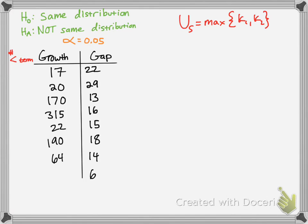So you would say, how many number of terms are less than each one? If we look at 17, notice how many terms are less than 17 in terms of the gap. 22 is larger, 29 is larger, 13 is less, 16 is less, 15 is less, 18 is larger, 14 is less, and 6 is less. So that's 5 that were less than 17. Then you do the same thing with 20. 22 is higher, 29 is higher, so 13 is less, 16 is less, 15 is less, 18 is less, 14 is less, and 6 is less. So that's 6.